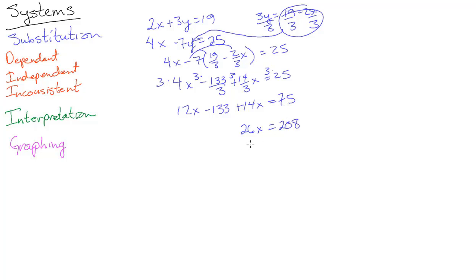If we divide by 26, x equals 8. Stick in x is 8 and we now have 2 times 8 is 16 plus 3y equals 19. Subtract 16 and we get 3y equals 3, y equals 1. 8, 1 is the answer.